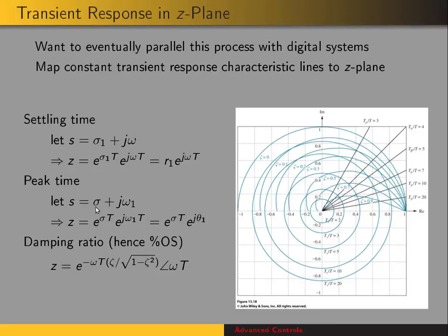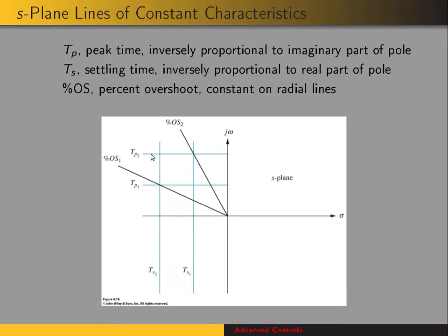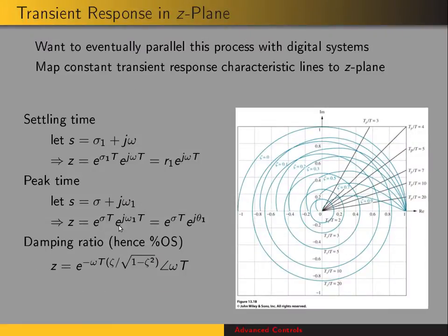For peak time, which was a constant imaginary part in the S-plane, constant peak time in the z-plane means constant angle — so radial lines represent constant peak times, normalized with respect to the sampling period. For damping ratio, we get curved lines of constant damping ratio. When zeta equals 0, we have a circle of radius 1, which is the line of marginal stability — poles with magnitude greater than 1 are unstable and less than 1 are stable.